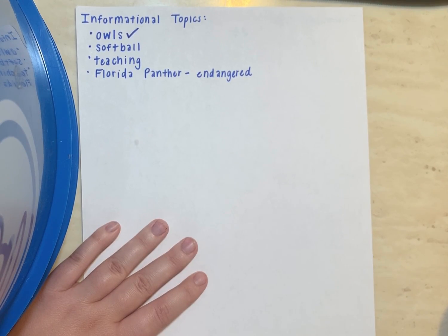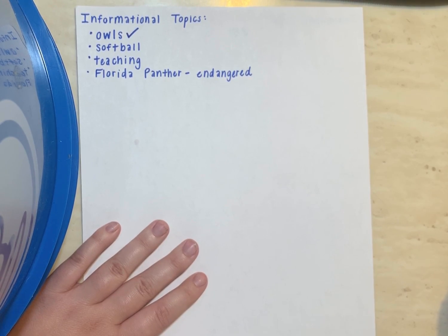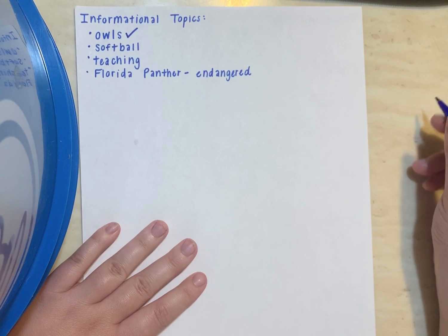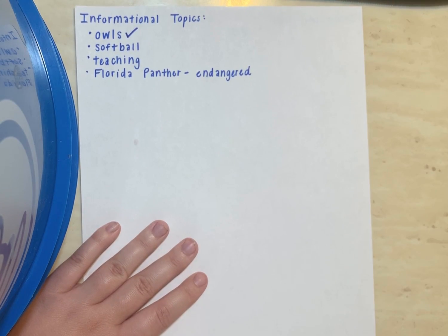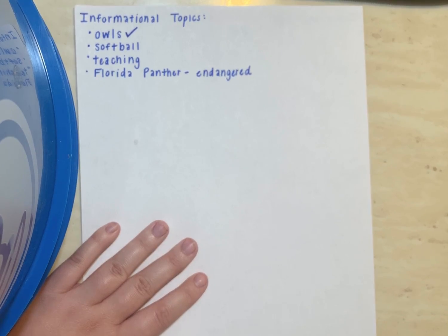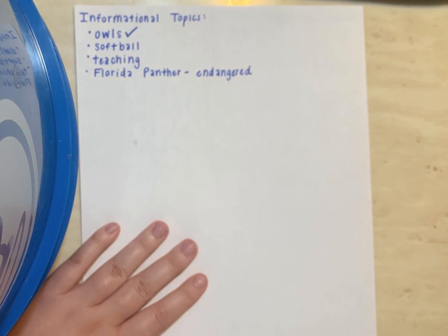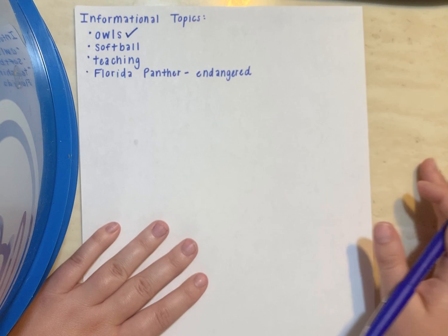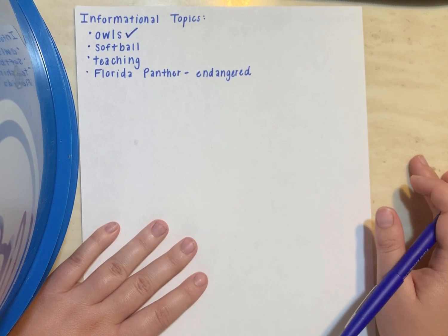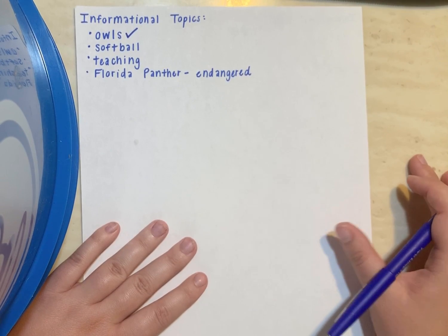Yesterday, Ms. Johns brainstormed some topics, and the one I ended up choosing was owls. Ms. Johns and Ms. Tanner both love owls a whole lot. But to be specific, I needed to choose one type of owl to make my research a little easier.